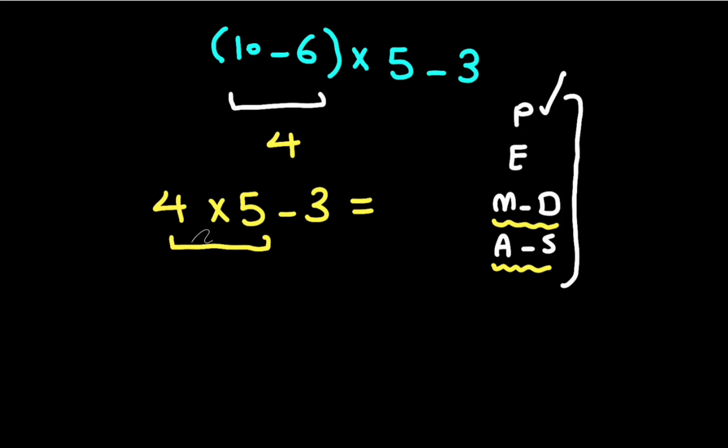Now 4 times 5 equals 20. At the end, 20 minus 3 equals 17. So the final answer is 17. Thank you for watching. Please like and subscribe if you like this video.